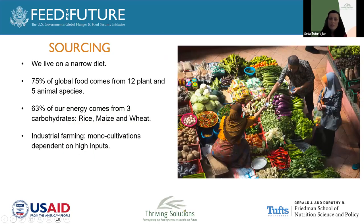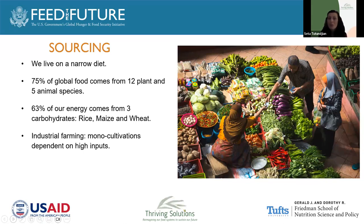Currently, our diet depends on very few crops. Three crops basically constitute 63% of our energy. A lot of our agri-food production is monoculture trying to produce those crops. Basically, what we're doing is not producing in a regenerative manner.